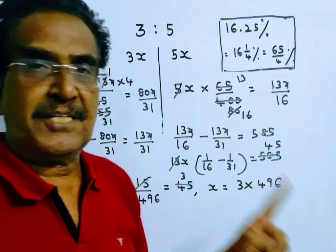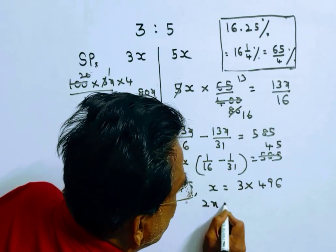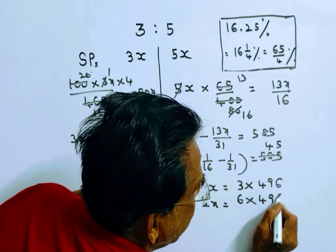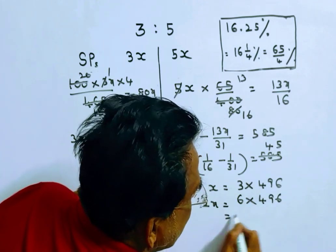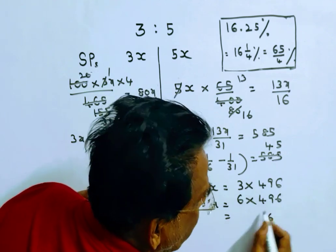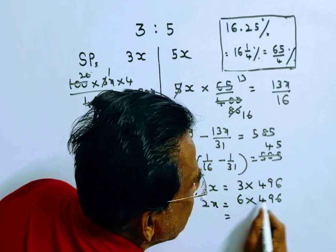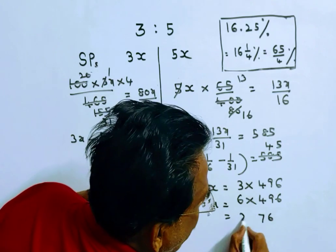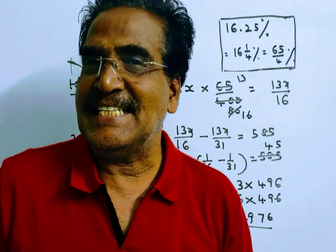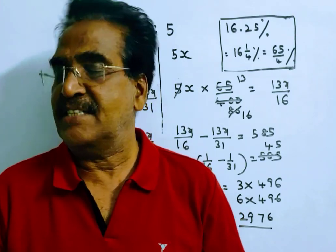X is equal to 3 × 496, so 2x is equal to 6 × 496 = 2976. Therefore, 2976 rupees is the difference between the selling prices.